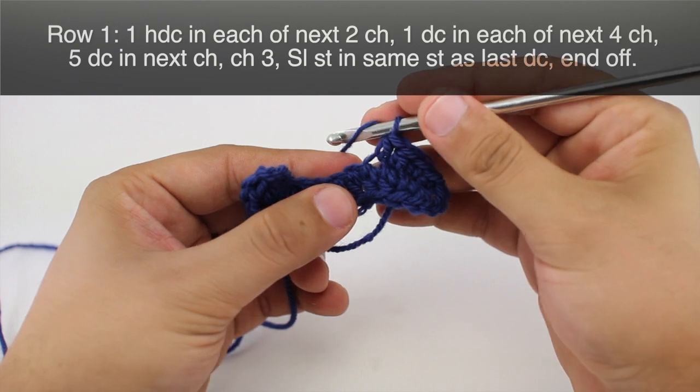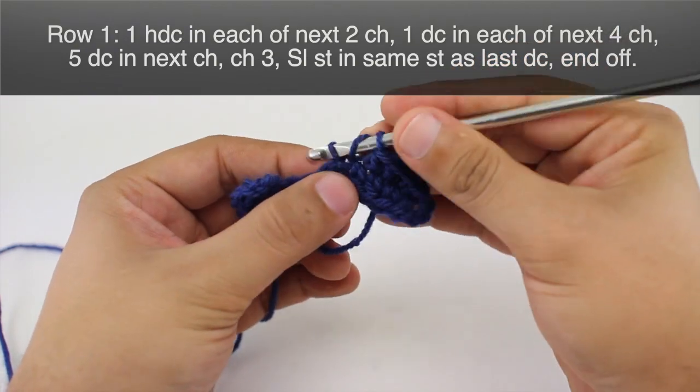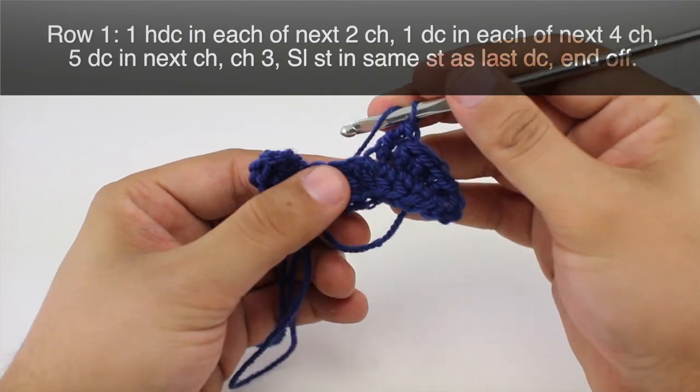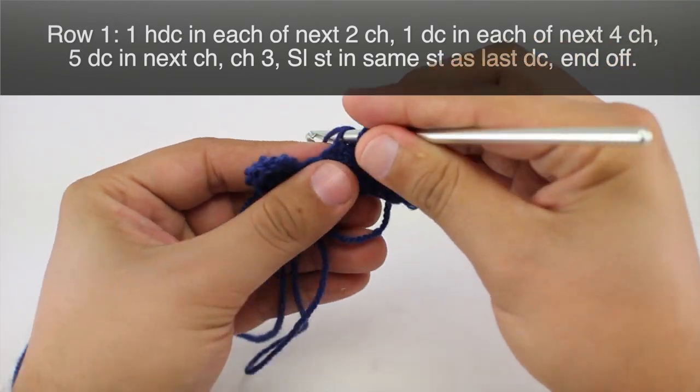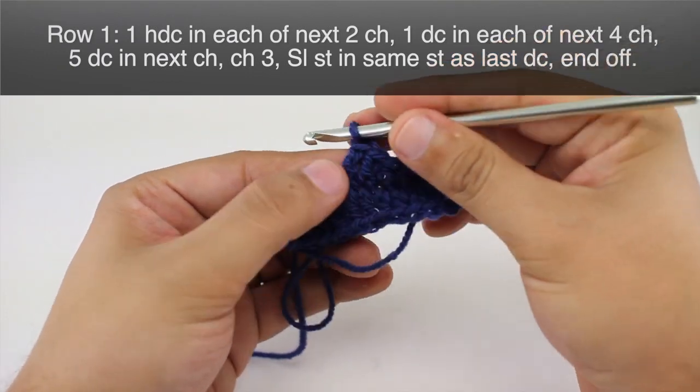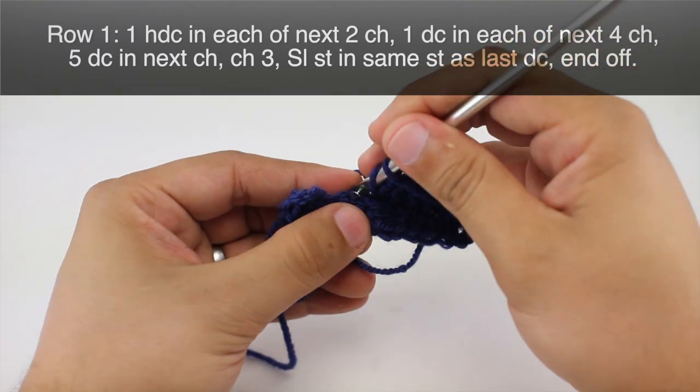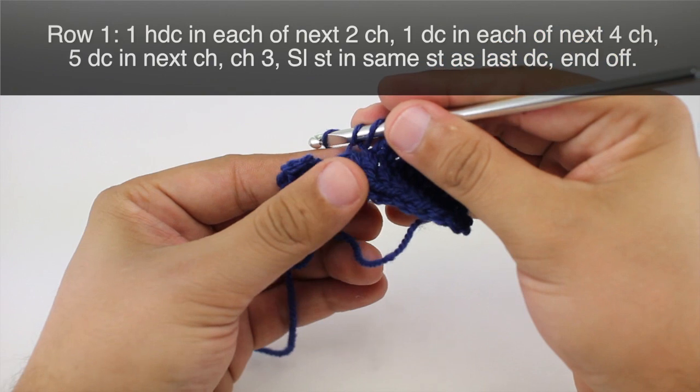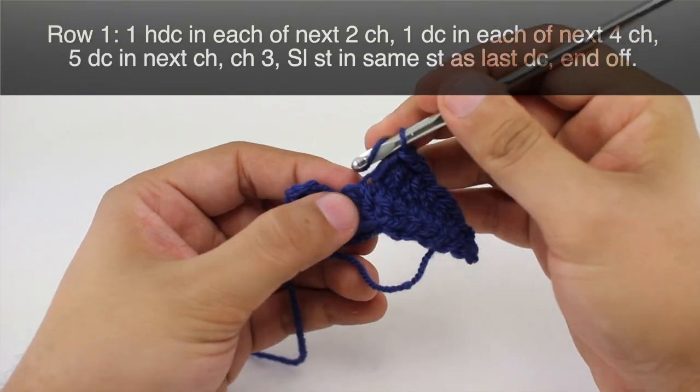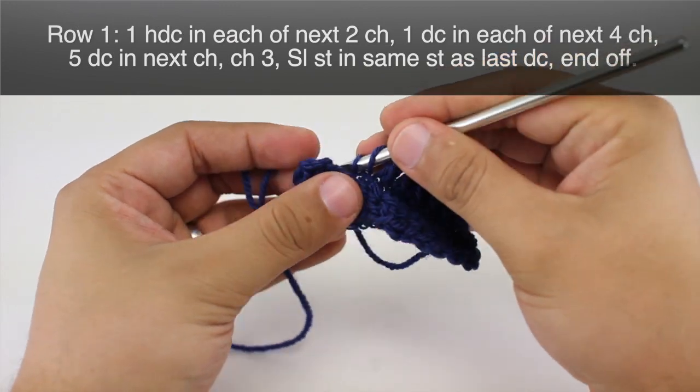Then we'll do four double crochets. There's two, three, and four.